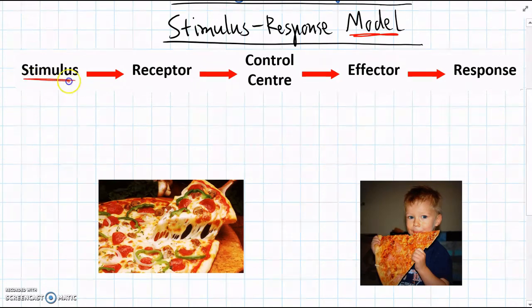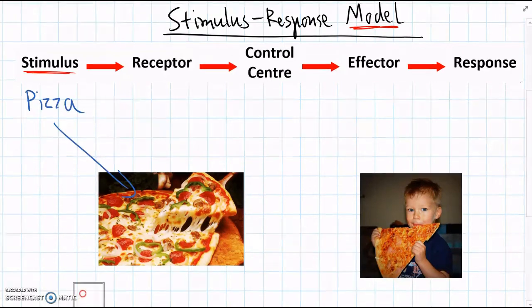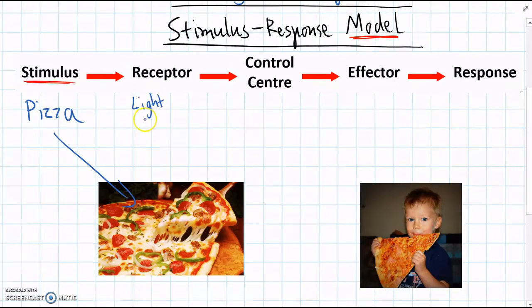You can see here, we've already seen, learnt about a stimulus, so let's look at this example here. The stimulus here is going to be a delicious looking pizza that's in our environment.